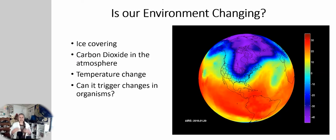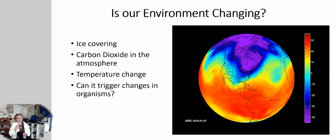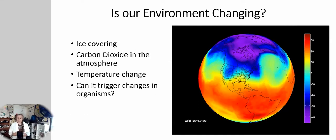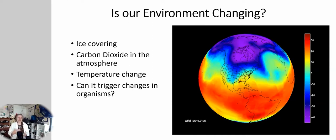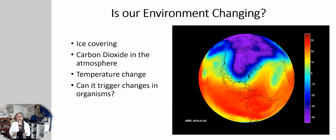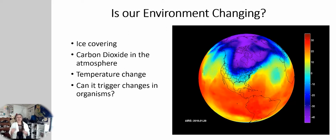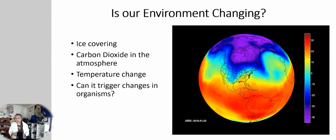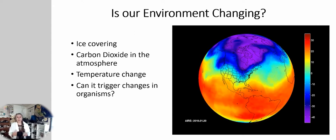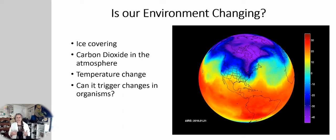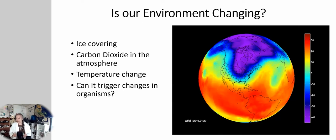Now, is our environment changing, and will it affect different organisms? We are changing right now. This data shows: our ice covering is changing, our carbon dioxide in the atmosphere is changing a little, our temperature is changing — not wildly, but just a little at a time. Will this cause different changes affecting organisms? It can trigger causes in organisms, but we're studying this as scientists, looking at these changes and seeing what it actually does. We do know change occurs, but how it changes we're not quite sure.